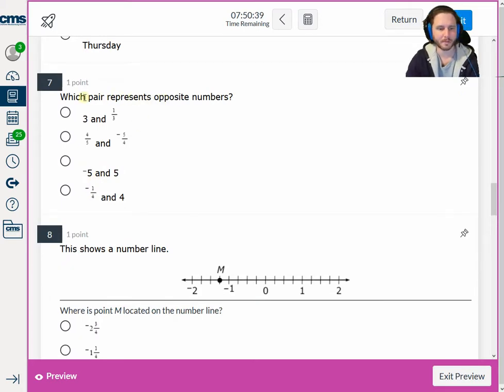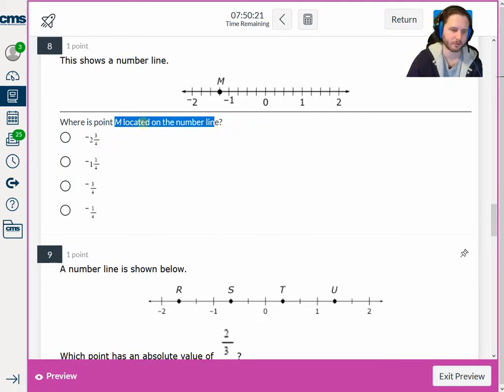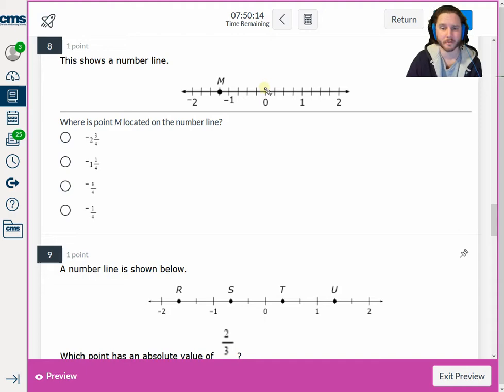For number 7, which pair represents opposite numbers? So you're just looking for positive and negative version. And that's it. Negative and positive 5. Those are opposites. Where is M located? Well, my answer choices all are in fourths. So I'm guessing this was counting by fourths. So if I started from zero, zero, negative one-fourth, negative two-fourths, negative three-fourths, negative four-fourths, which is one whole. So negative one, negative one and one-fourth. That's where M was supposed to be located.